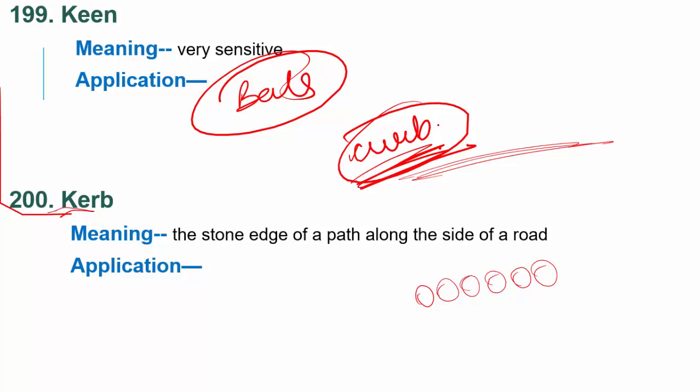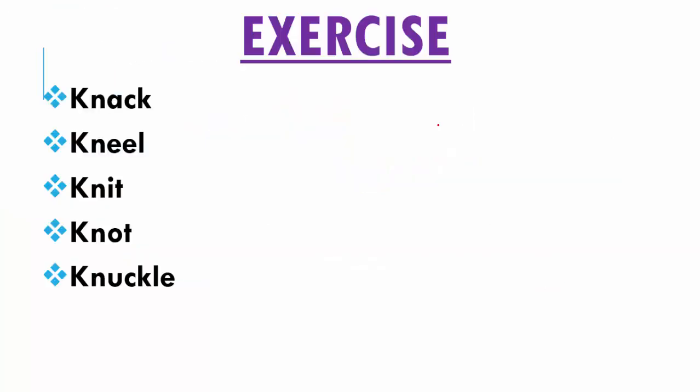So these were the ten words jiske meaning aur application meine aapko bata diya. Now I will give you five words jinke meaning aur application aapko mujhe batane hai comment section mein. The five words are: knack, kneel, knit, knot, knuckle. Inki meanings aur application comment section mein dijiye. Lecture achha laga to like kardena, share kardena apne friends ke saath, subscribe kardena channel ko aur bell icon dabana mat bhulna. Aap log Twitter, Facebook, Instagram pe bhi hame follow kar sakte ho, aur is lecture ki PDF hamari website, Facebook page, aur Telegram channel pe mil jayegi.